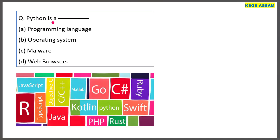Python — what is it? It is a programming language. Java, C, C++ are also programming languages.